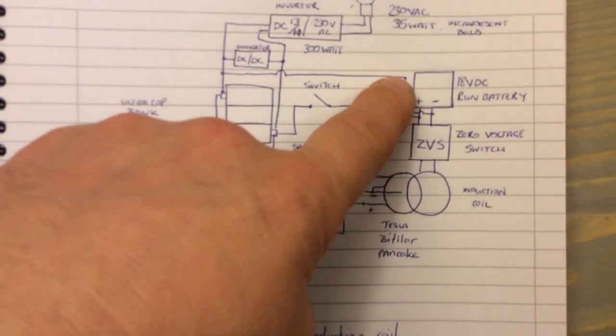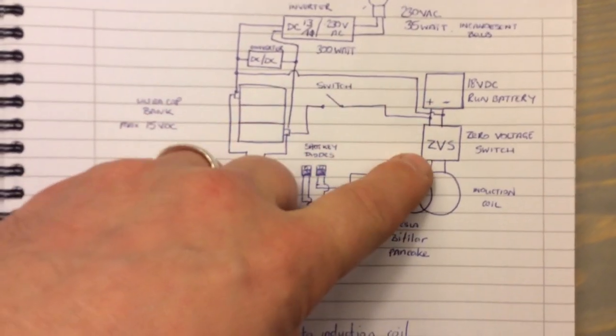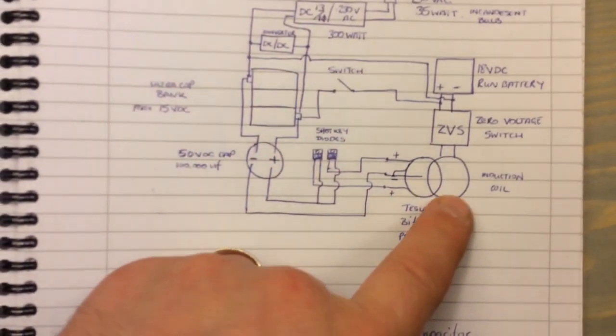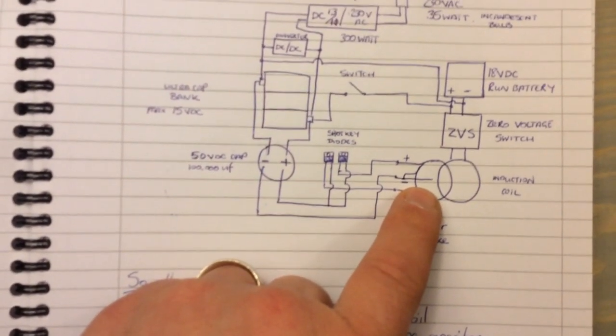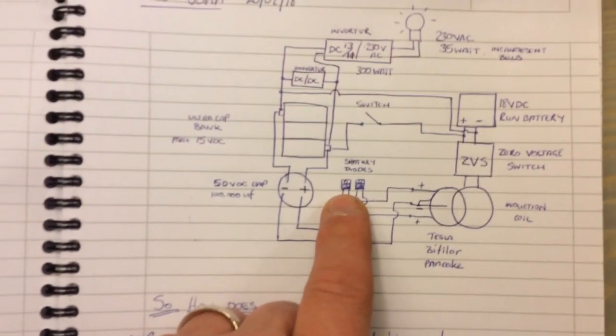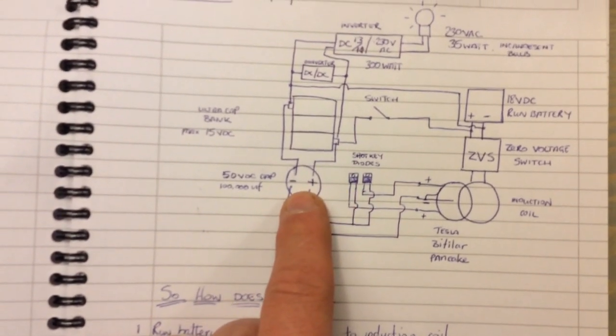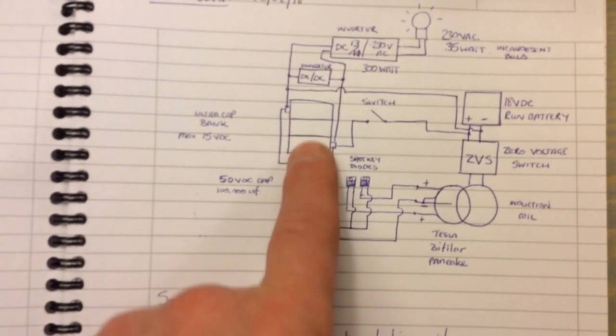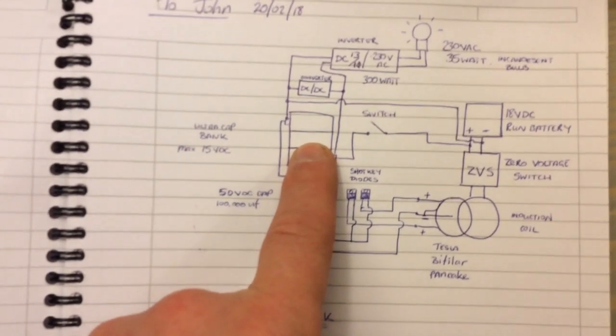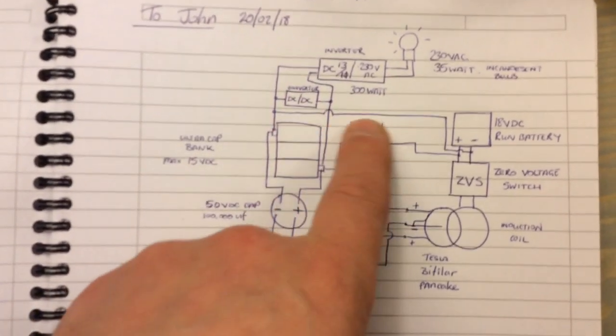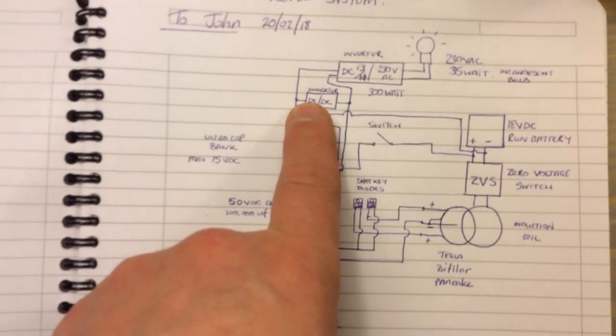Basically: input voltage battery, ZVS driver circuit to an induction coil to a Tesla bike filer, Schottky diodes, 50-volt DC cap into ultra cap bank. One side's going through a switch into the input of the ZVS.